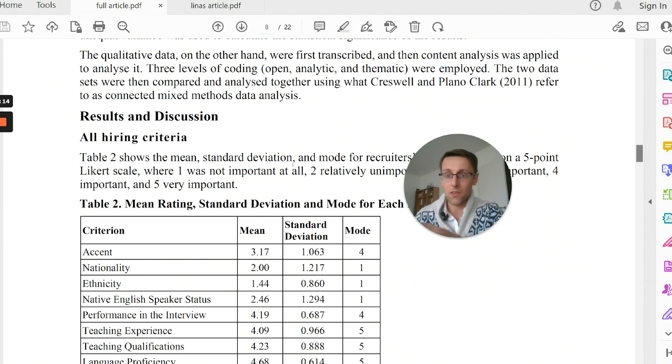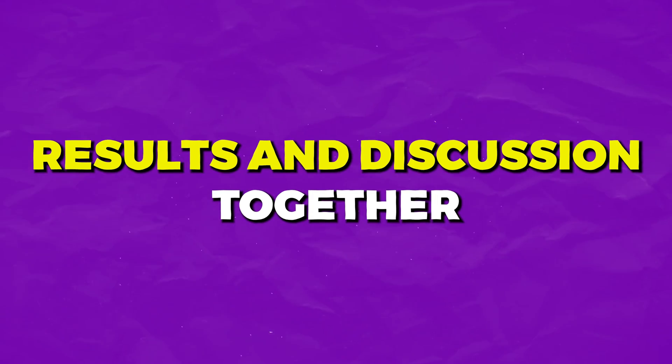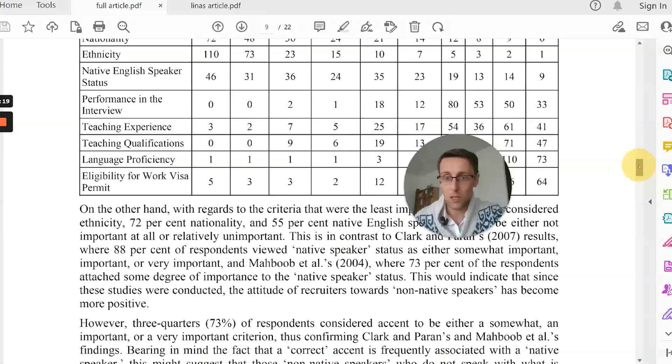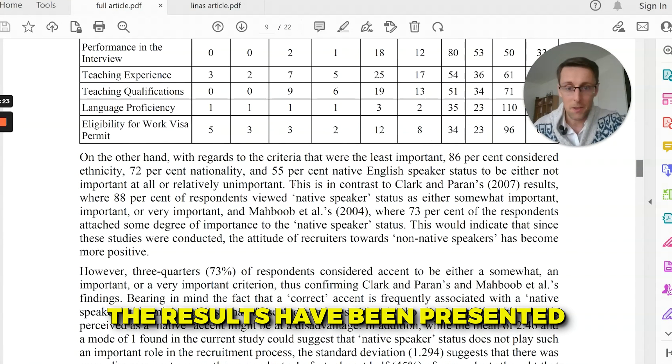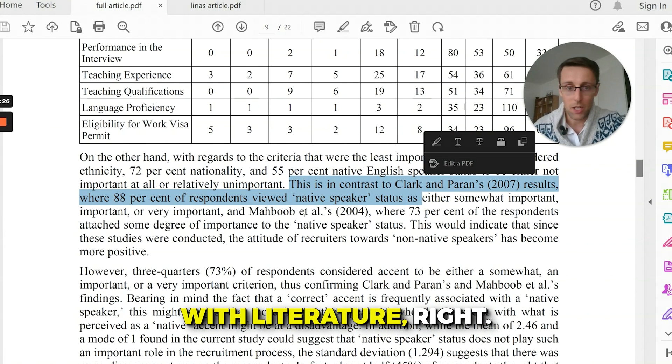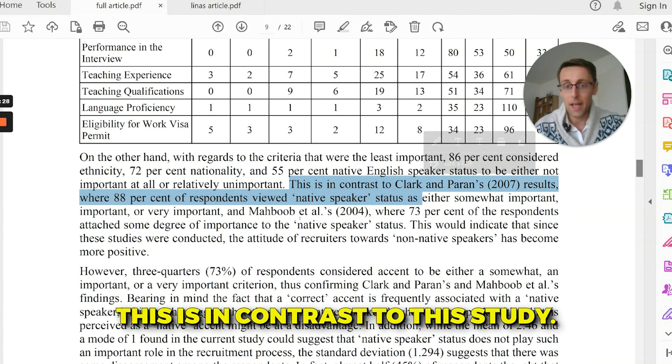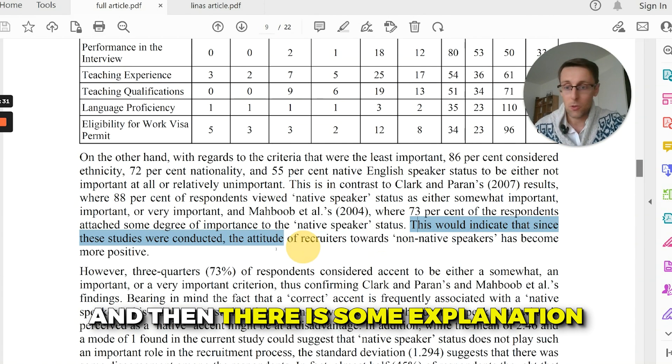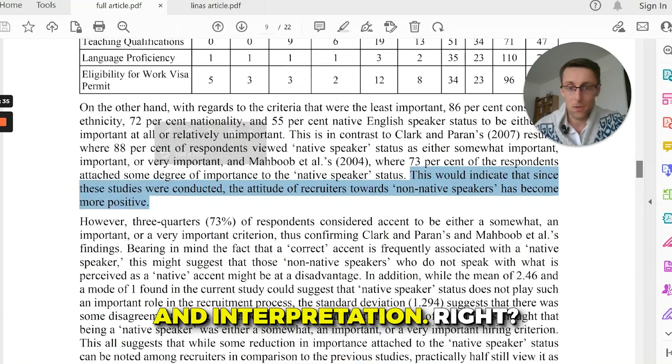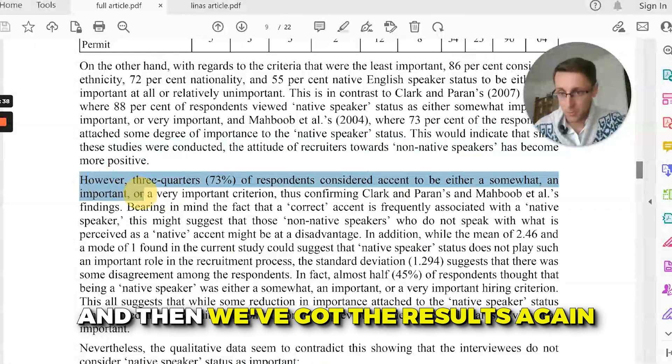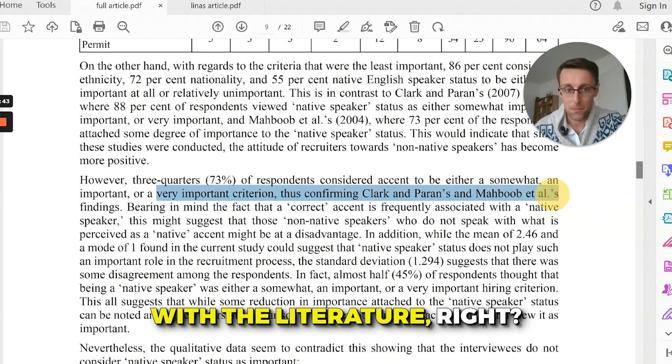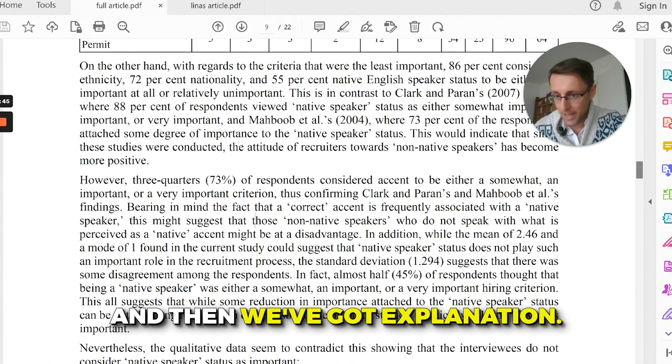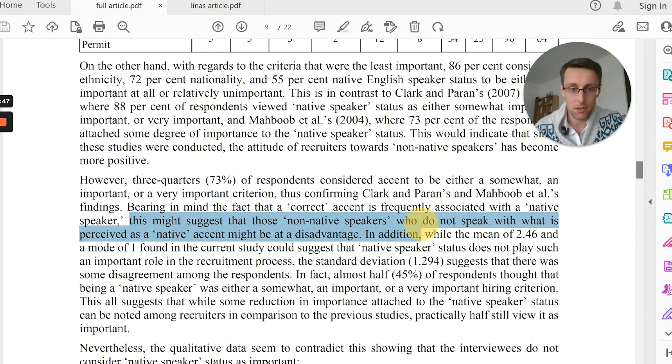Now, how do you do it if you've got one section, results and discussion together? Well, you follow a very similar pattern where you first present some results. Results have been presented. And then they are compared with literature. This is in contrast to this study. And then there is some explanation and interpretation. And then we've got the results again. And then we've got comparison with the literature. And then we've got explanation.